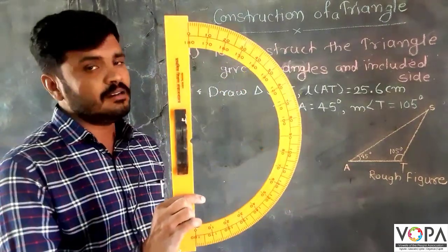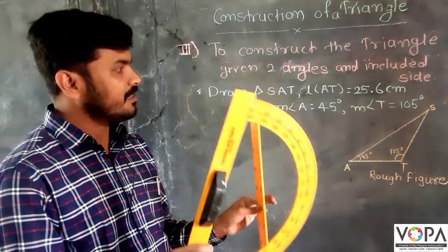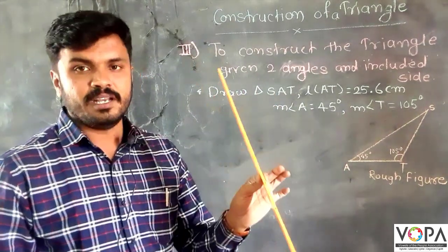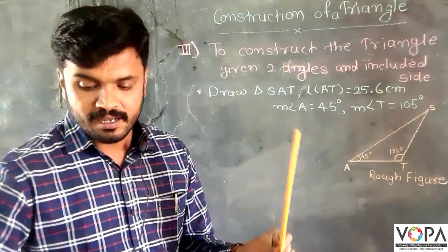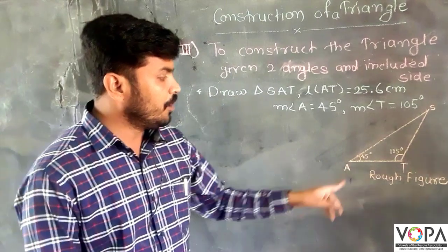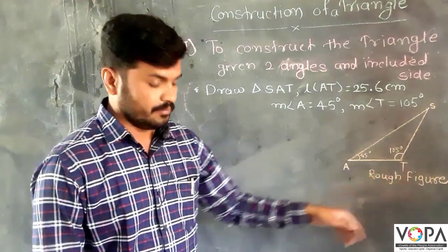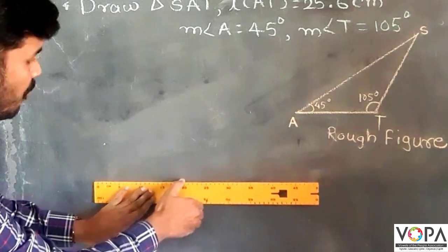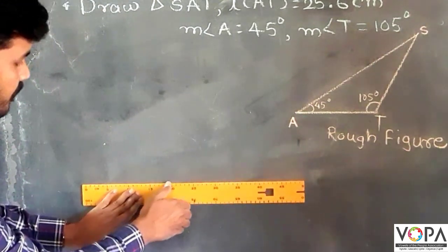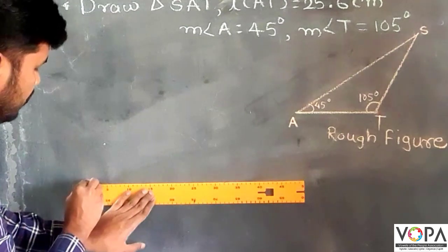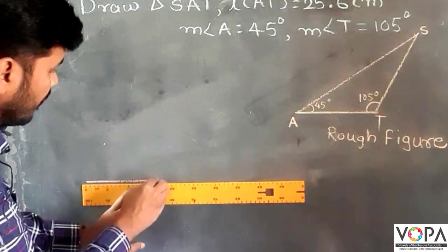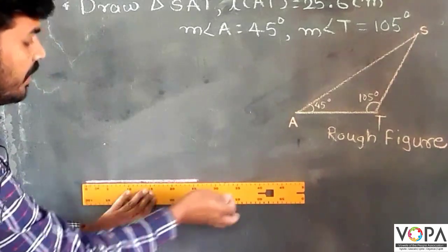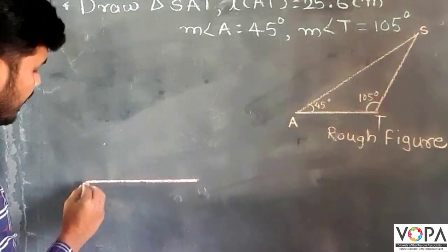We will use only a ruler and protractor. First, we draw the side AT. Side AT is 25.6 centimeters. So here is the 25.6 centimeter side of the triangle.